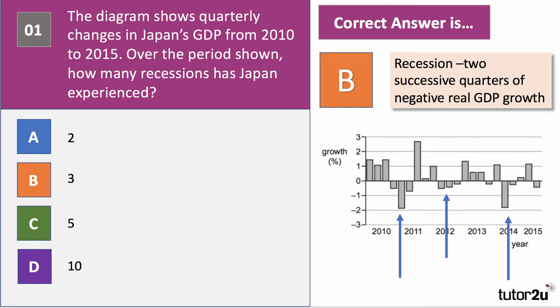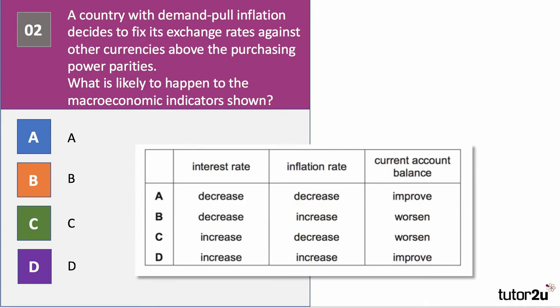Let's move on to question number two. A country with demand-pull inflation decides to fix its exchange rate against other currencies above purchasing power parity. What is likely to happen to the macroeconomic indicators shown in the table? What's likely to happen to the policy interest rate, to inflation, and to the current account balance? Pause the video and come back when you're ready.